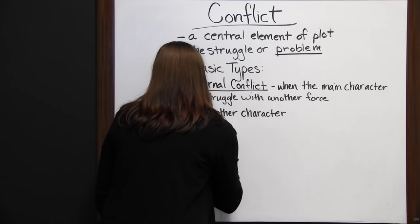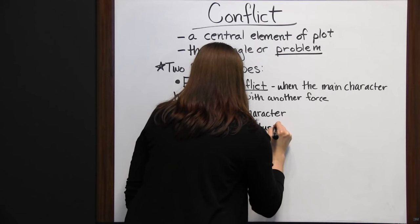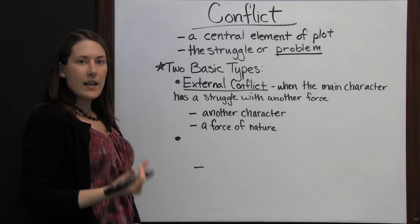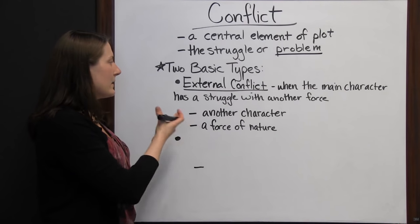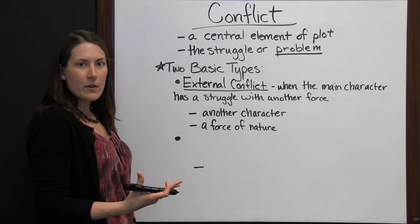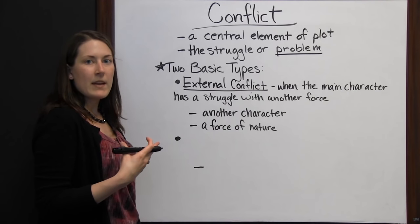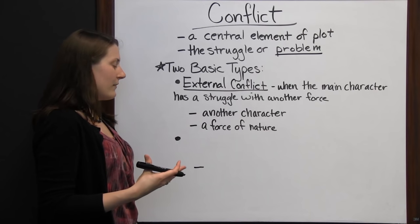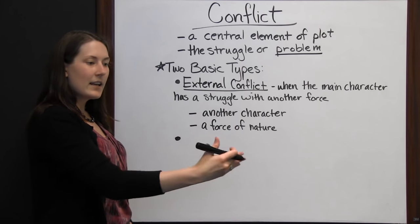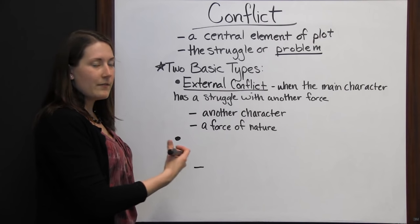For example, a bad storm coming would be a conflict because that storm is a force of nature. Or if a man is trapped on an island, all of nature is keeping him there — he can't get away. The struggle to survive could be another conflict with nature. These are all external conflicts.